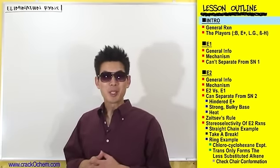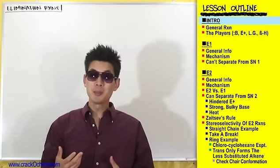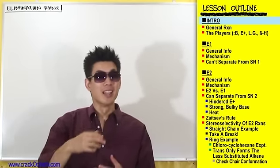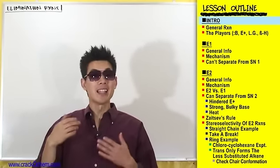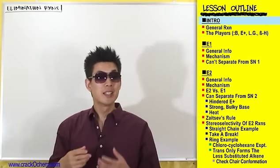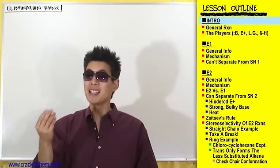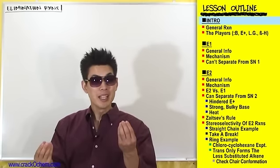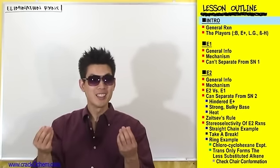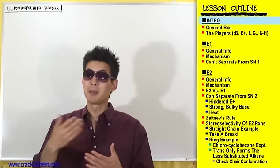Today we're going to be talking about elimination reactions. Elimination reactions are very similar to the nucleophilic substitution reactions we learned last chapter. If you have your SN1 and SN2 reactions down, it's going to make learning elimination reactions so much easier, because there are so many parallels between the two chapters. Nucleophilic substitutions are called SN1 and SN2; elimination reactions are called E1 and E2 — very similar sounding names that also follow a lot of the same general principles.